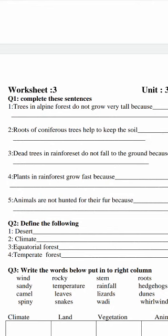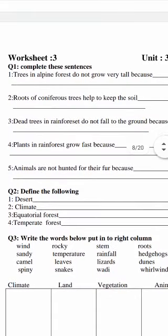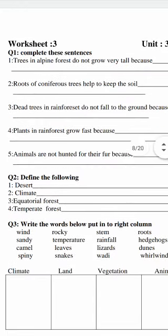Those two concepts are discussed here: deserts and forests. Deserts form in places where there is very little rain — where there is no rain and warm weather. There are many different types of deserts: polar deserts, subtropical deserts, continental deserts, and coastal deserts.